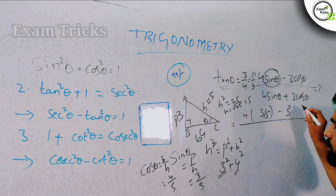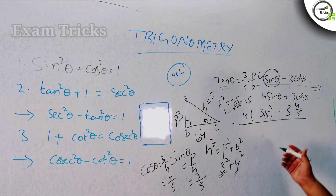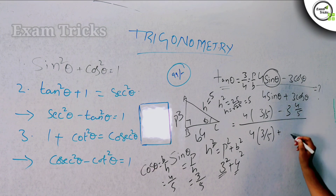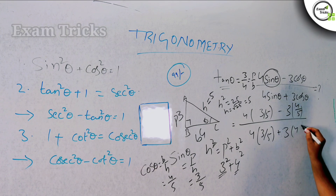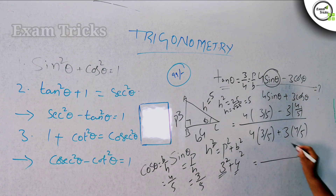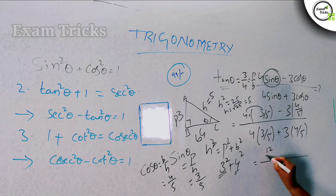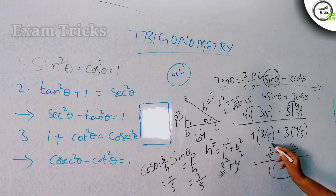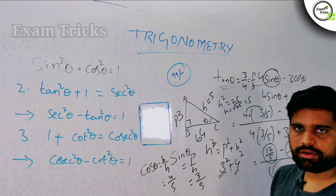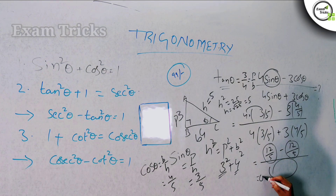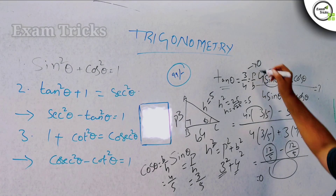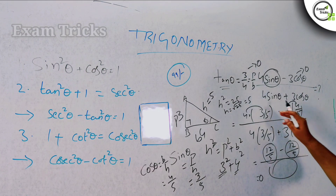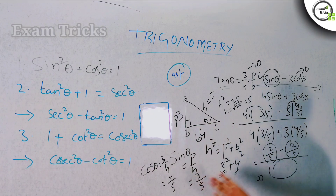Now substituting: 4 into sinθ is 4 × (3/5) = 12/5, and 3 into cosθ is 3 × (4/5) = 12/5. So the numerator is 12/5 minus 12/5 equals 0. Therefore 4sinθ minus 3cosθ by 4sinθ plus 3cosθ equals 0. The answer is 0.